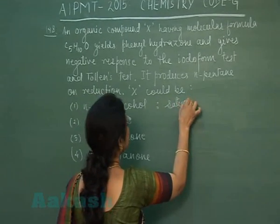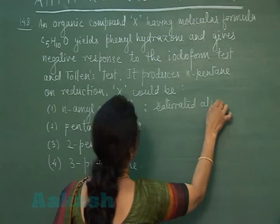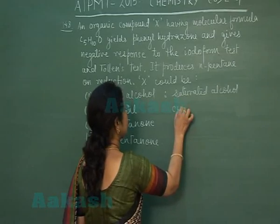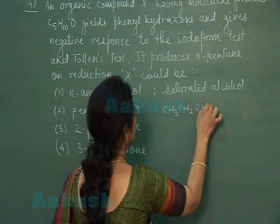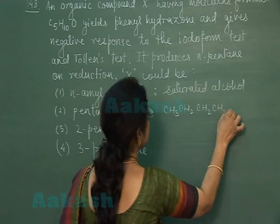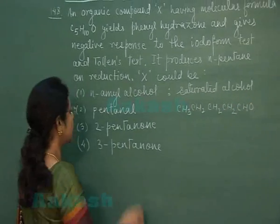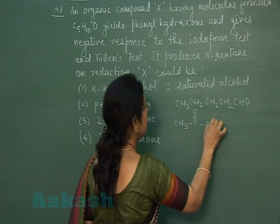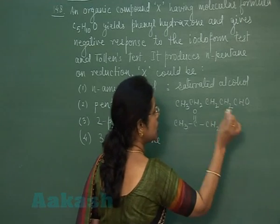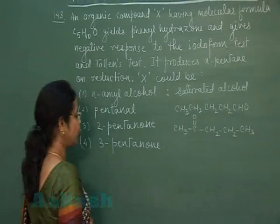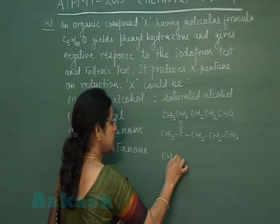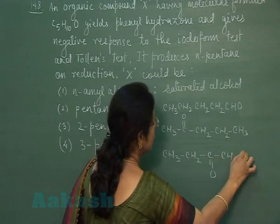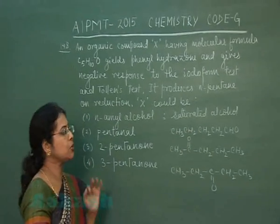Normal amyl alcohol is a saturated alcohol. Second option, pentanal: CH₃-CH₂-CH₂-CH₂-CHO. Third option, 2-pentanone: CH₃-CO-CH₂-CH₂-CH₃. And the fourth option, 3-pentanone: CH₃-CH₂-CO-CH₂-CH₃.